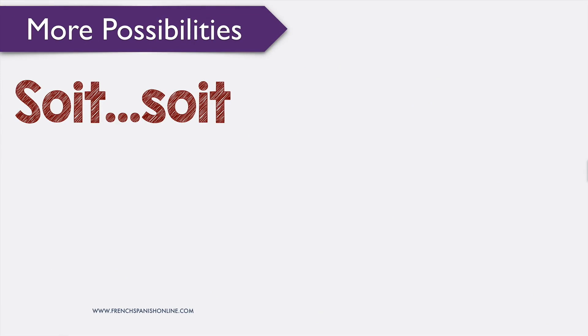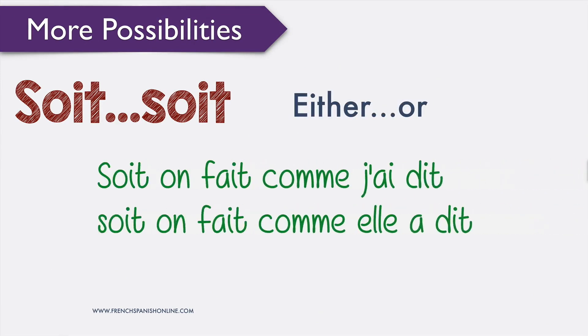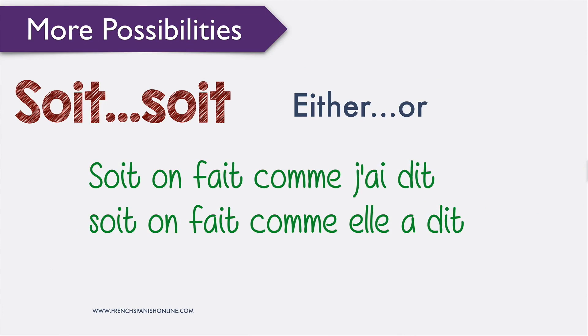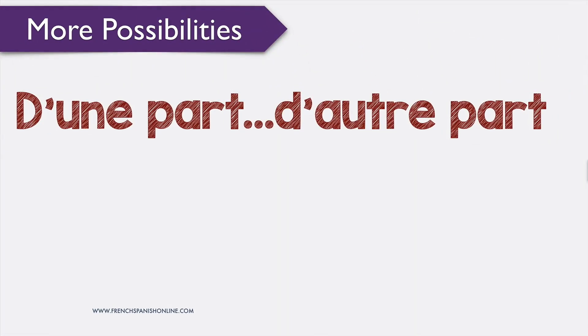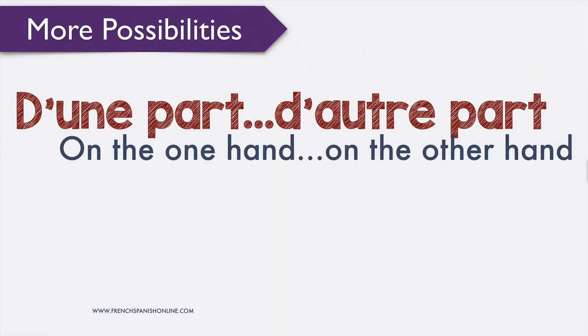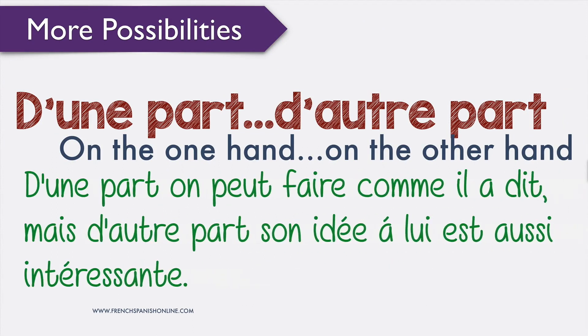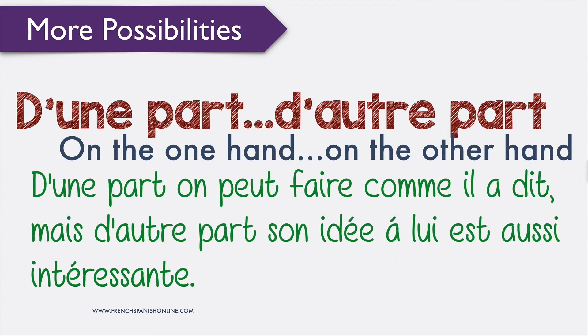'Soit…soit' gives two choices, meaning 'either…or': 'soit on fait comme j'ai dit, soit on fait comme elle a dit'. Another expression is 'd'une part…d'autre part', meaning 'on the one hand…on the other hand': 'd'une part on peut faire comme il a dit, mais d'autre part son idée à lui est aussi intéressante'.